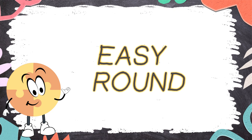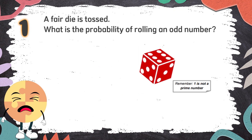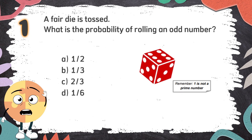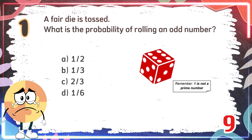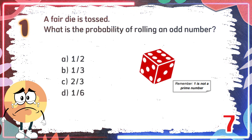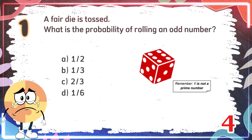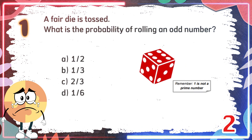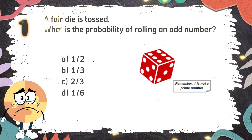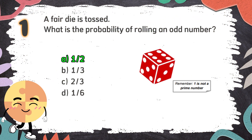Easy Round. Number 1: A fair die is tossed. What is the probability of rolling an odd number? The choices are A. 1 out of 2, B. 1 out of 3, C. 2 out of 3, D. 1 out of 6. The correct answer is A. 1 out of 2.